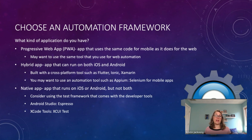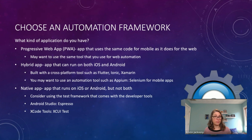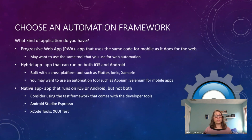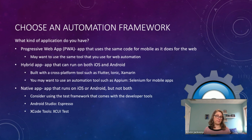If you have a hybrid app — an app that can run on both iOS and Android where the developer writes the code once — it's usually built with cross-platform tools such as Flutter, Ionic, or Xamarin. For a hybrid app, you might want to use an automation tool such as Appium, which is basically Selenium for mobile apps, where you write your test code once and that code can run on both iOS and Android.